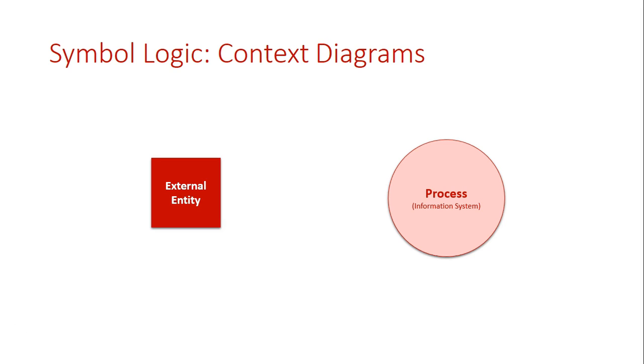We then illustrate the relationship between the external entities and the information system through showing the data flow between them. What does the external entity put into the system? This is illustrated by a flowline, and the flowline is always supported by the actual writing of data that is going into the system. With the flowline, you write what data is going into the system.